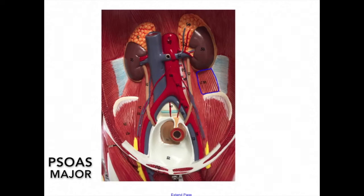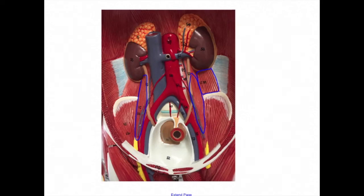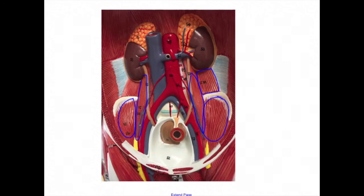Here we see the psoas major. The origin is the lumbar vertebrae. The insertion is the lesser trochanter of the femur. The action is flexion of the femur and vertebral column. The last pelvic muscle is the iliacus, located here. The origin is the iliac fossa and the insertion is also the lesser trochanter of the femur. The action is to flex the femur.